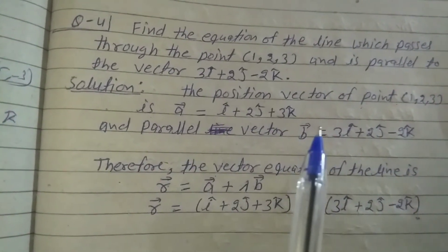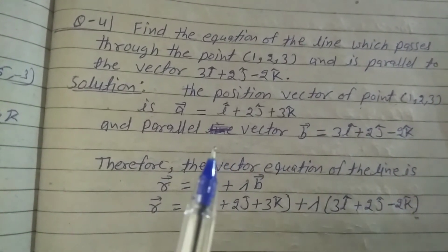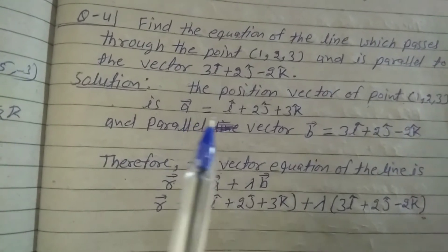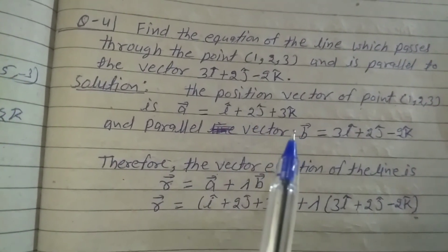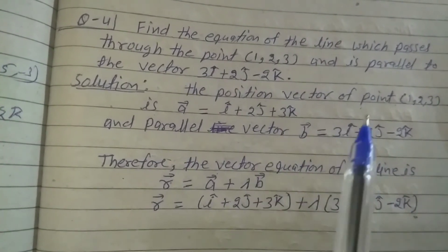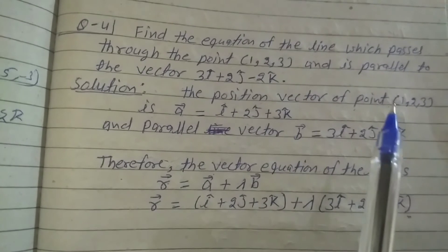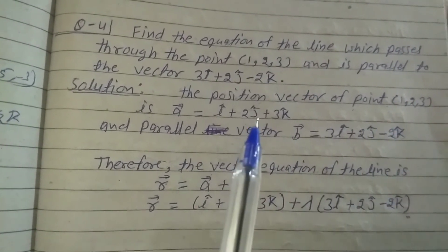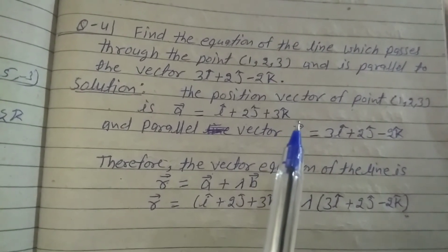The position vector of the point (1, 2, 3) is vector a equals i cap plus 2j cap plus 3k cap. In vector form, the point is represented by taking the first x coordinate i cap plus second coordinate j cap plus third coordinate k cap.